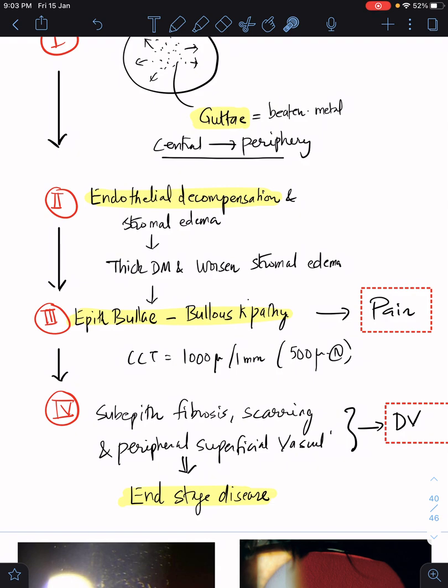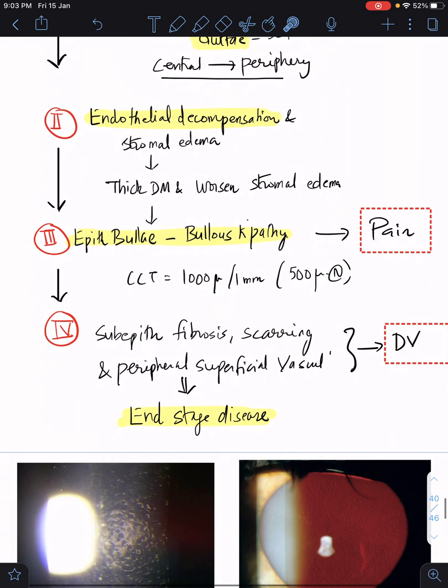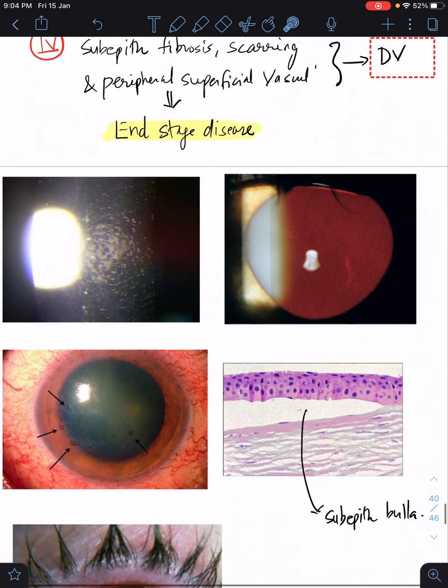So endothelium has lost its function. The stroma becomes edematous, the DM becomes thickened, that's stage two. As the edema progresses from endothelium to epithelium, there is formation of epithelial bullae - bullous keratopathy. This bulla can rupture, exposing the nerve endings causing severe pain, especially in the morning. The central corneal thickness is increased to 1000 microns whereas the normal is only 500 microns. The fourth stage is end-stage disease characterized by subepithelial fibrosis, scarring, and peripheral superficial vascularization causing irreversible defective vision.